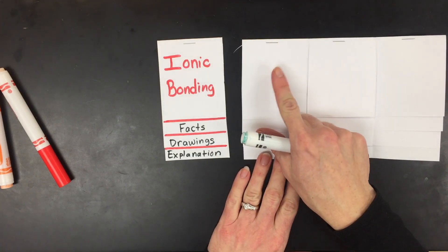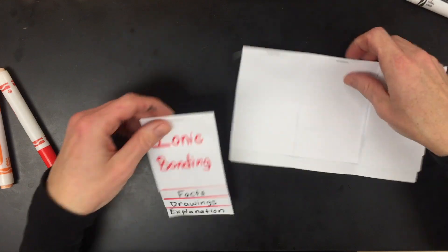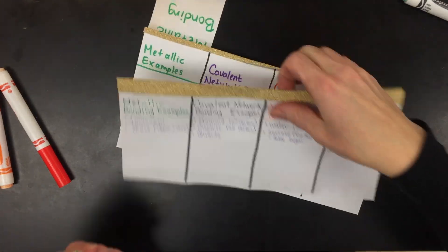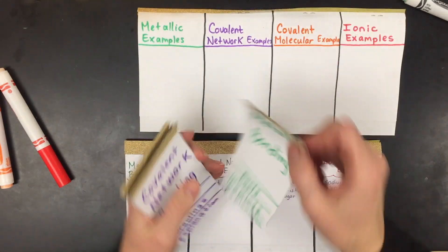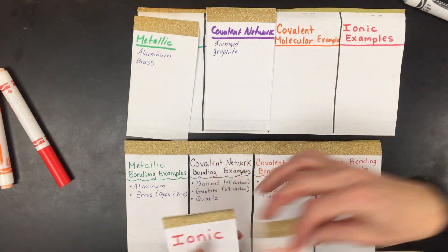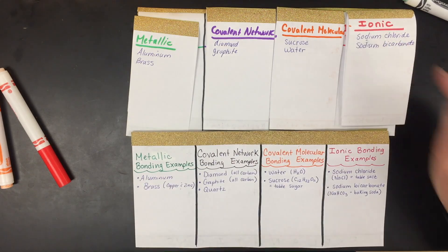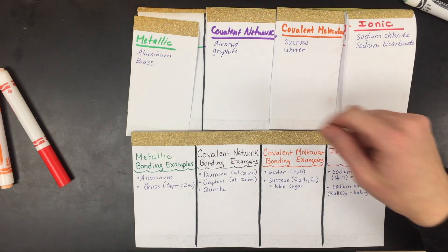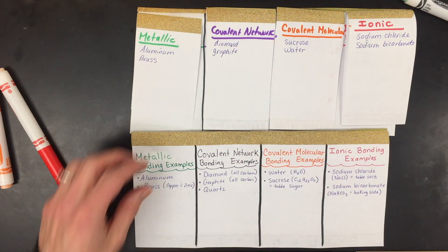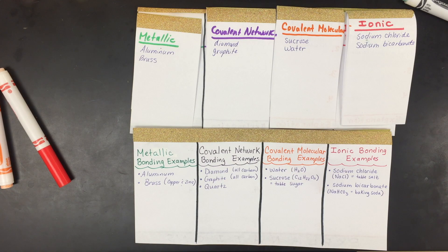Continue with covalent molecular, covalent network, and metallic. On the back of each section, include examples of that bond type — for ionic: sodium chloride or sodium bicarbonate; for covalent molecular: sucrose or water; for covalent network: diamond and graphite; for metallic: aluminum and brass. So on the back you'll also include examples of those types of bonds you might encounter in everyday life.